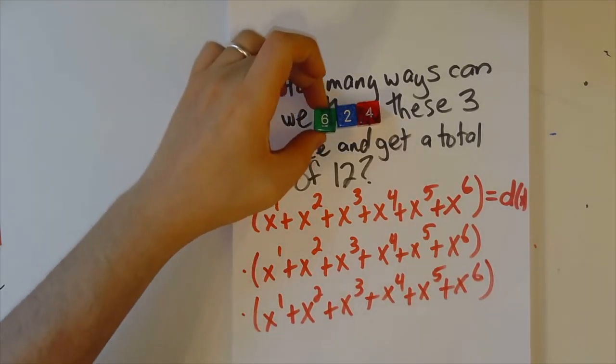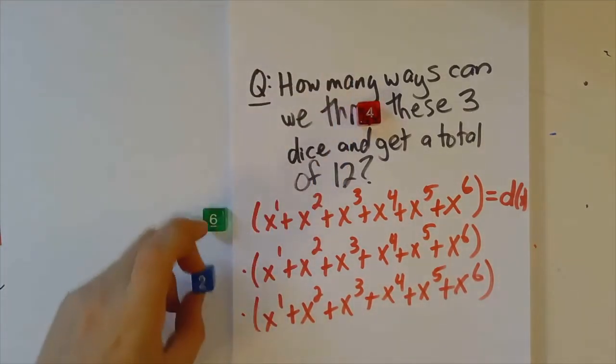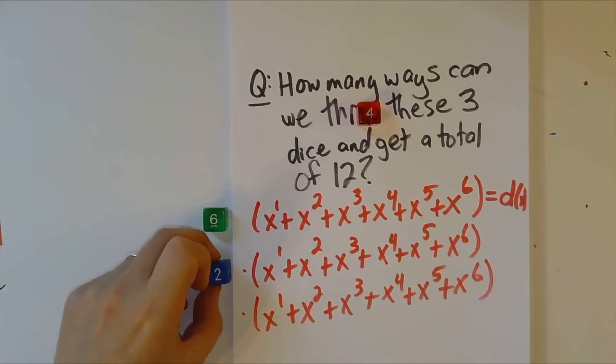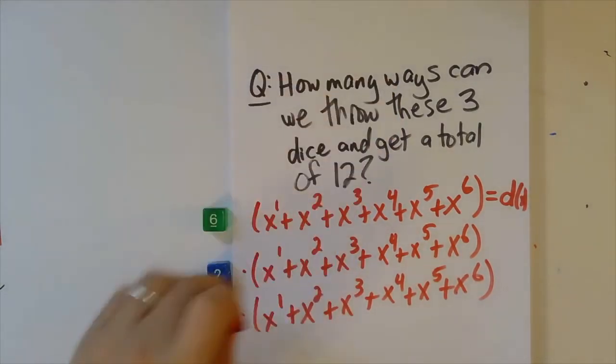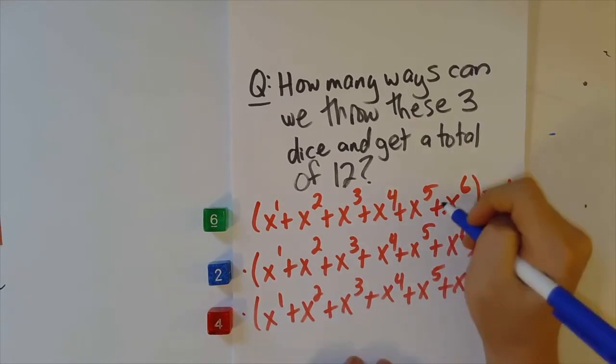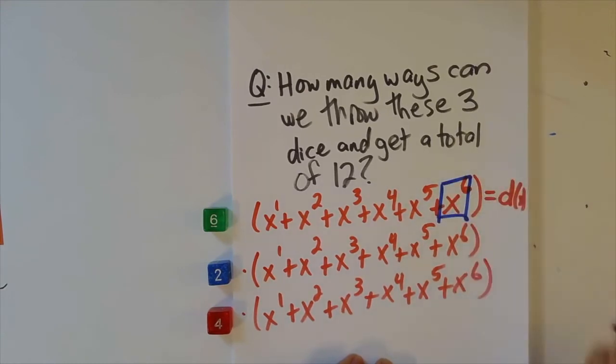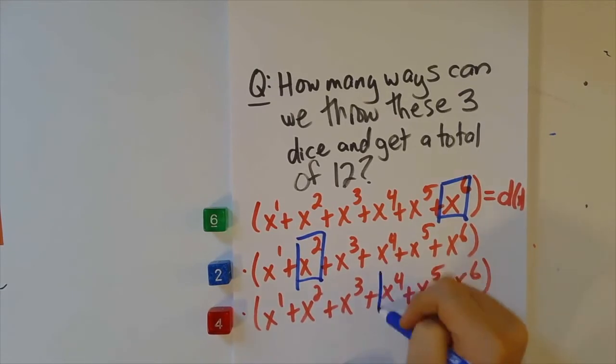So I'm going to think of the first one here as corresponding to the green die, the second one here as corresponding to the blue die, and the third one as corresponding to the red die. And so I'm thinking here of our roll as really corresponding to this x to the sixth, this x squared, and this x to the fourth.